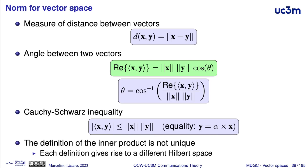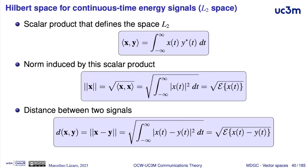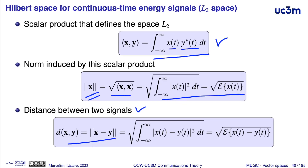The definition of the inner product is not unique, and each definition gives rise to a different Hilbert space with different characteristics for these measures of distance. If the purpose is to help in the design of a digital modulator, the appropriate definition for the inner product of two signals is the integral of the product of the first one with the complex conjugate of the second one. With this definition, the norm induced — the square root of the inner product of a vector with itself — equals the square root of the energy of the signal. And the distance induced by the norm — the norm of the difference between two vectors — is equivalent to the square root of the energy of the difference between two signals.